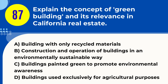Question 87. Explain the concept of green building and its relevance in California real estate. A. Building with only recycled materials. B. Construction and operation of buildings in an environmentally sustainable way. C. Buildings painted green to promote environmental awareness. D. Buildings used exclusively for agricultural purposes. Answer: B. Explanation. Green building in California real estate refers to the practice of constructing and operating buildings in an environmentally sustainable manner. This includes using energy-efficient materials, reducing waste, conserving water, and minimizing the impact on the environment. In California, green building practices are increasingly relevant due to environmental concerns and state regulations promoting sustainability.